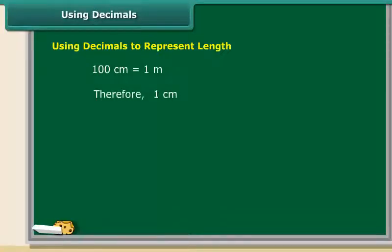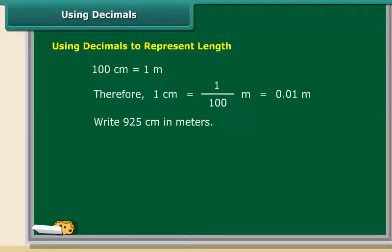It means 1 centimeter is equal to one hundredth of a meter. Let us use the decimal notation to write 925 centimeters.